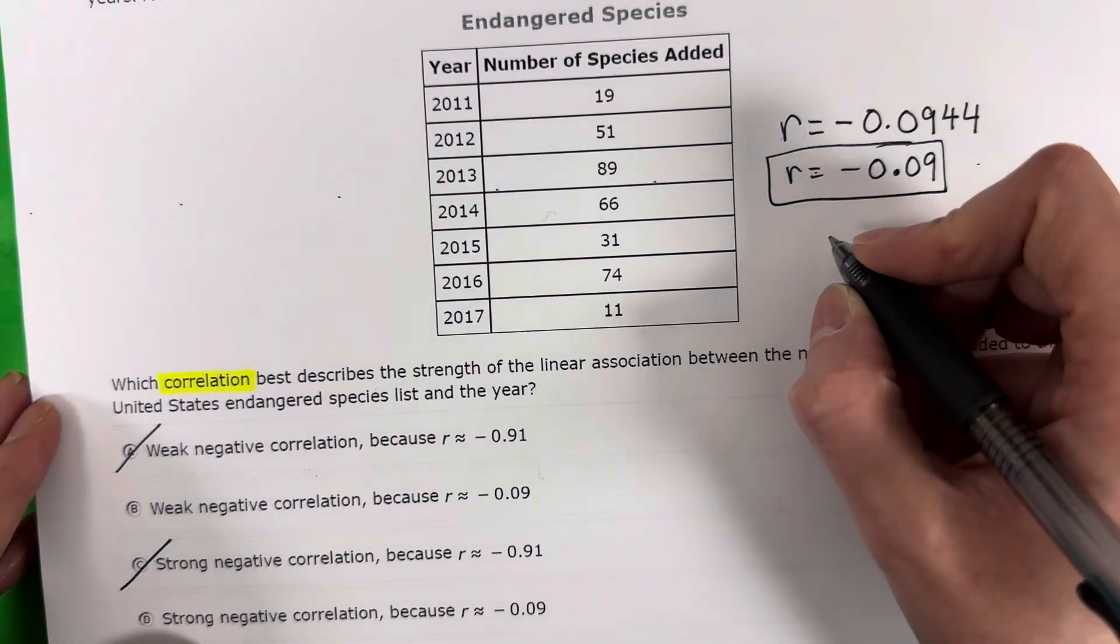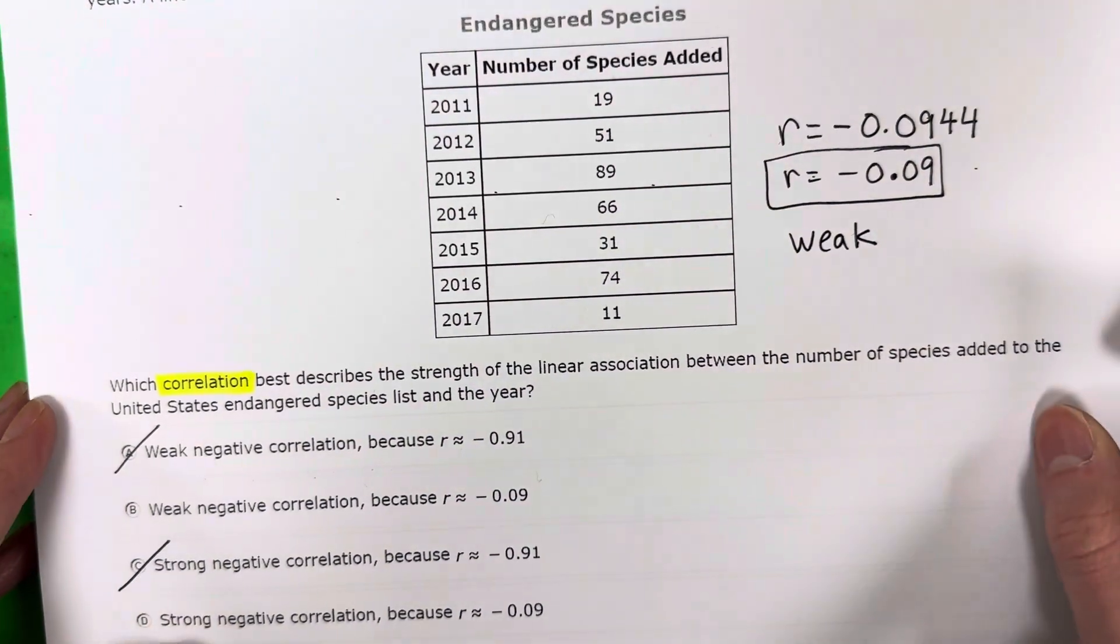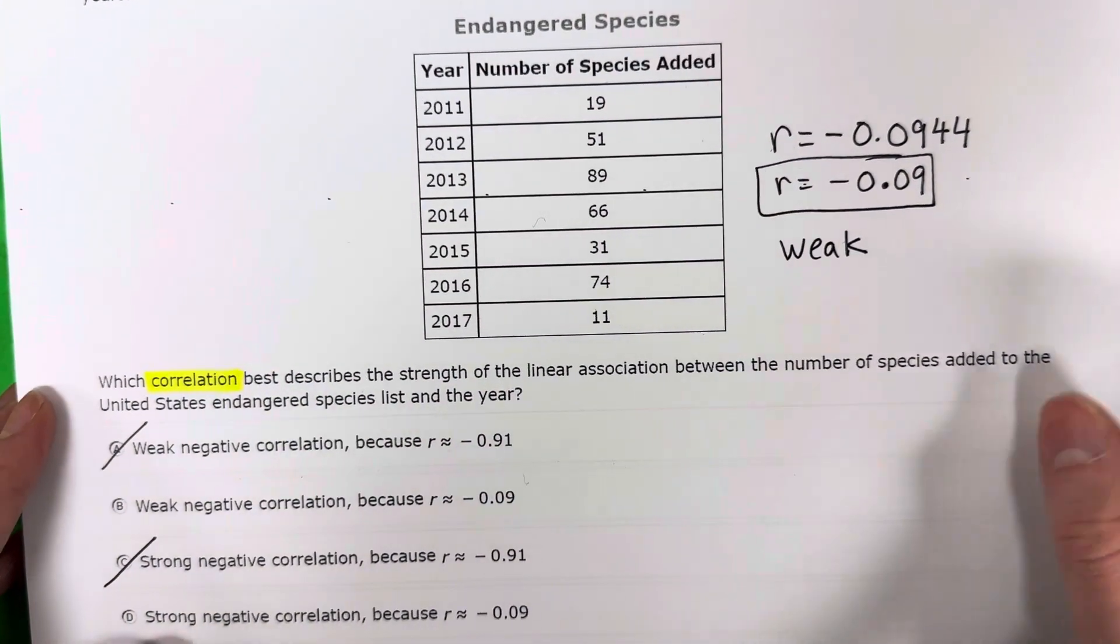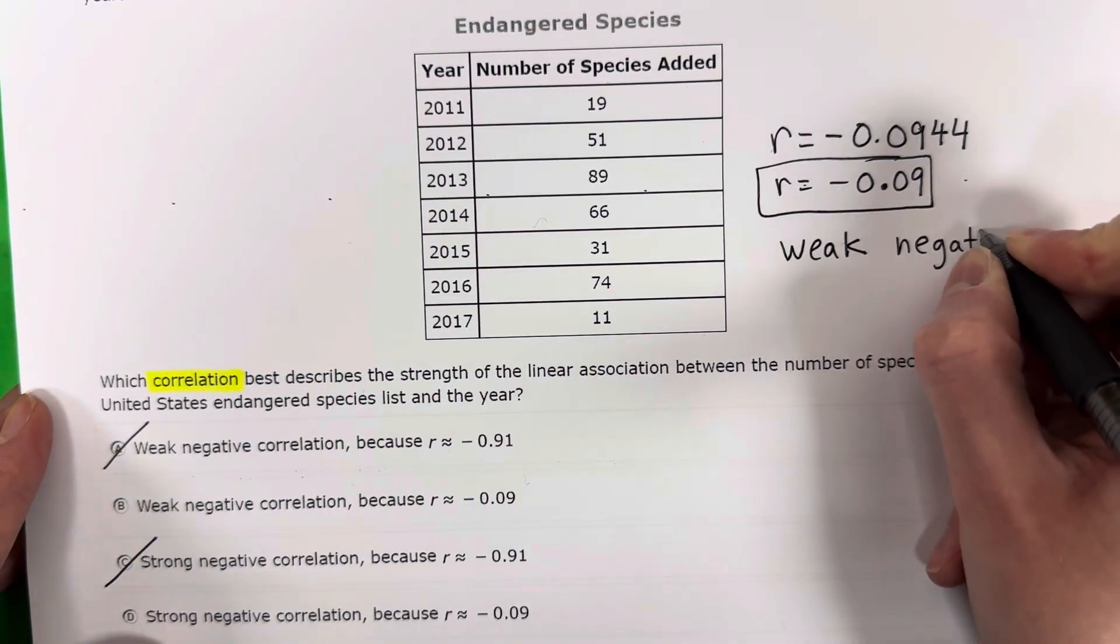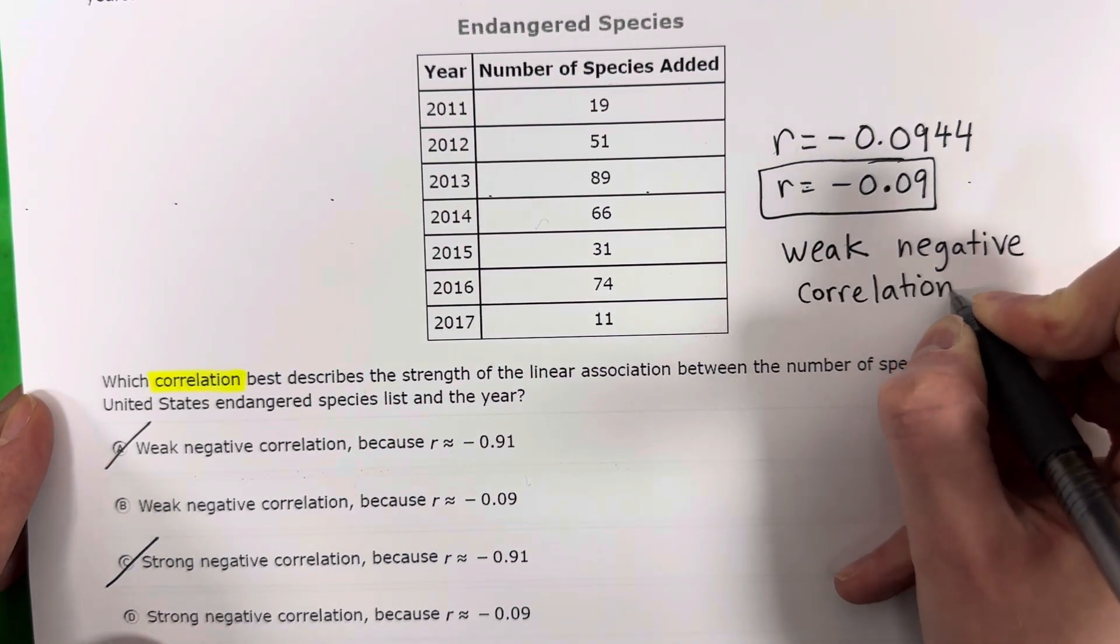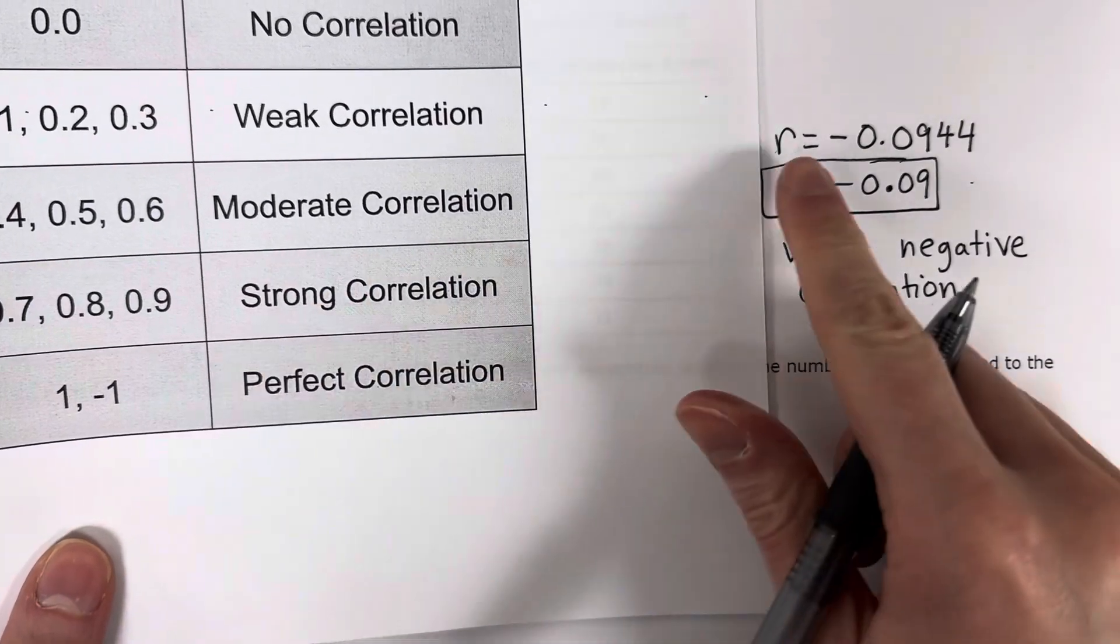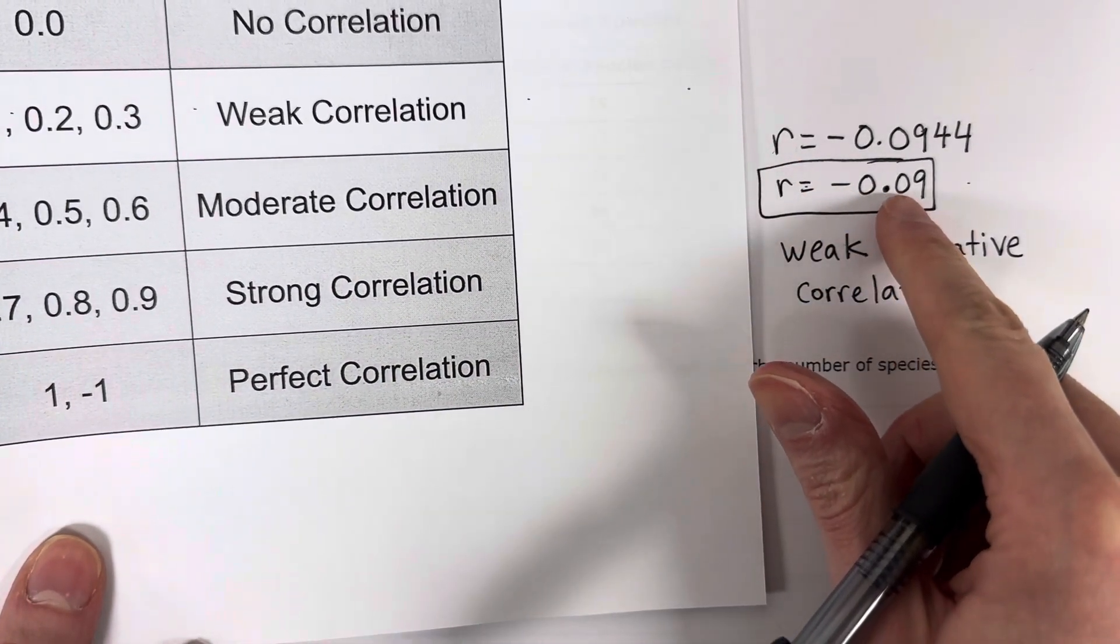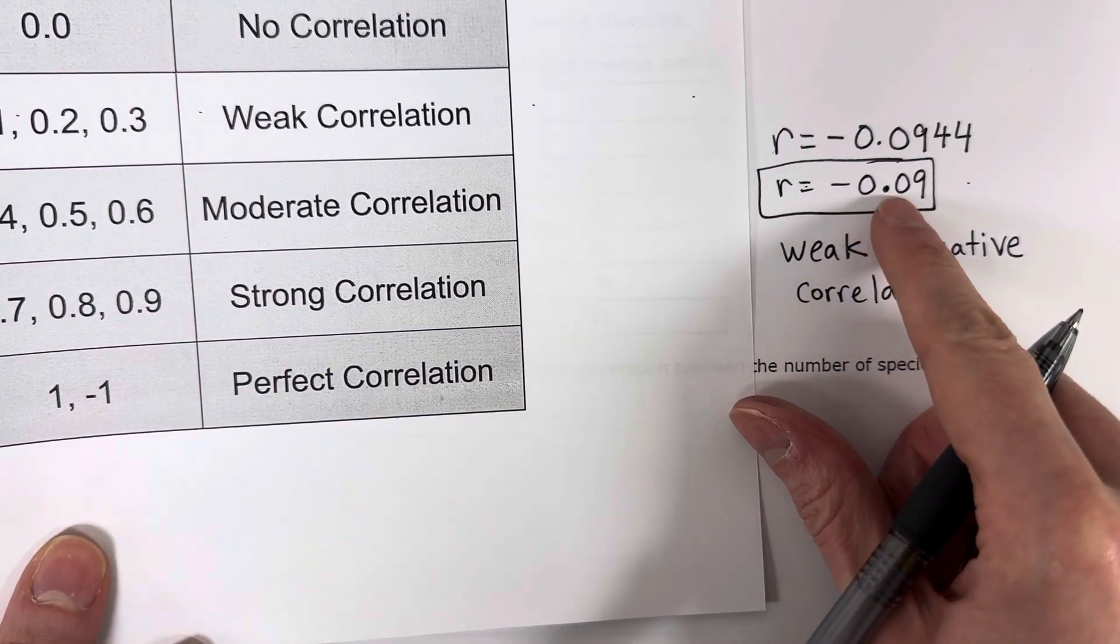Okay. So this is a weak. Also, you need to give the sign. Is it positive or negative? This is negative. It's a weak negative correlation. And let me just say, this is not a strong correlation because this is not 0.9, right? This is 0.9. This is 0.09.